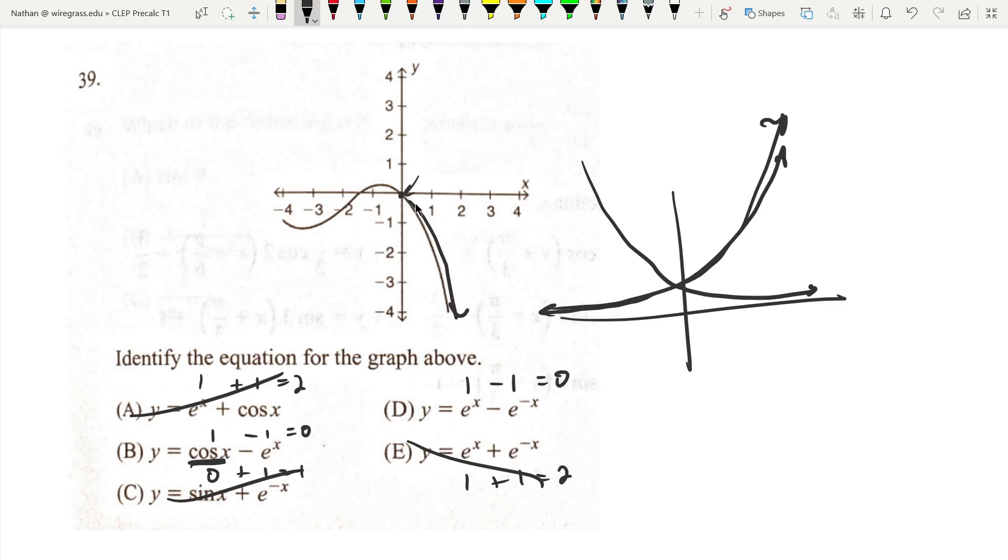We have minus e^x, so you expect to go down to negative infinity. And on this side of the graph, we have more of this sinusoidal behavior. It's going to be more and more like cosine as you go further and further out. So B is our answer.